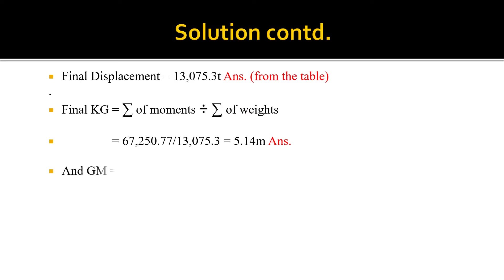Then, using the formula GM = KM − KG, the vessel entered port with a KM of 7.68. We subtract the KG we just calculated, 5.14, and that gives us a final GM of 2.54 meters.